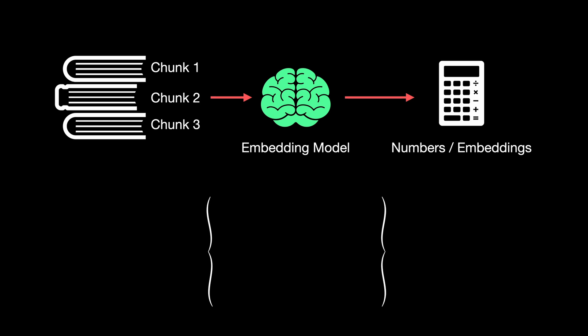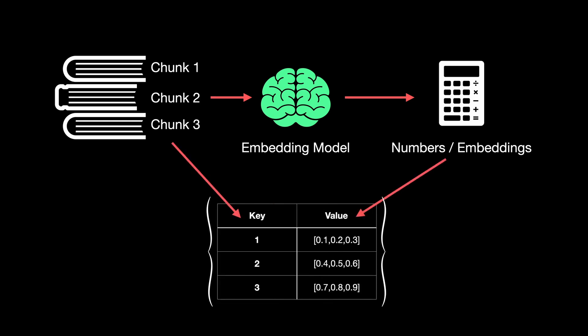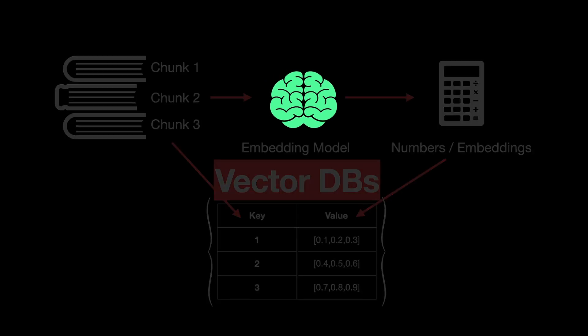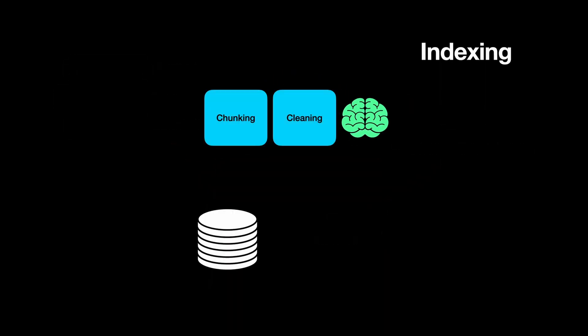The mappings between these vectors and their chunks are stored as key-value pairs in a database. These databases have special properties compared to traditional OLTP databases, and so they are referred to as vector DBs or vector databases. The sequence of steps — cleaning, chunking, and embedding — is all referred to as indexing.